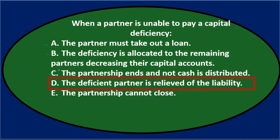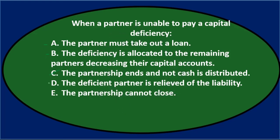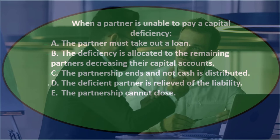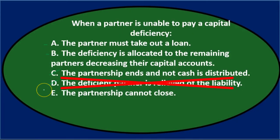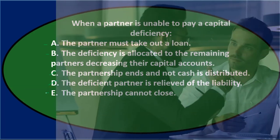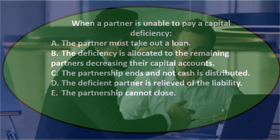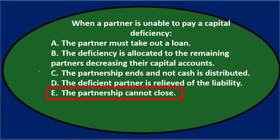D says the deficient partner is relieved of the liability — but if someone has a negative capital account, you wouldn't think they'd automatically be relieved; they should owe the partnership something. E says the partnership cannot close — that might seem reasonable because if a partner can't pay, how do you distribute to the remaining partners? So we keep A, B, and E as possibilities.